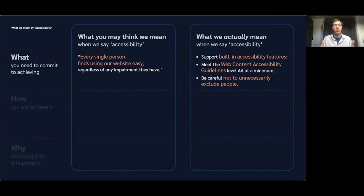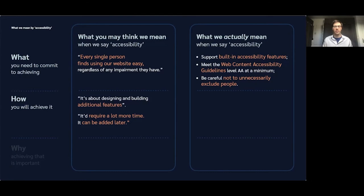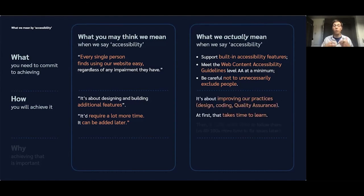We've talked about what you need to commit to achieving as a team. Now let's talk about how you will achieve this. As we've just demonstrated, it's mostly not about designing and building additional features, and it does not need to take significantly more time. Instead, it's about improving your practices — your design practices, your coding practices, or your testing practices. Learning to do that as a team takes time at the beginning. But you might be wondering: don't we already know how to do that?